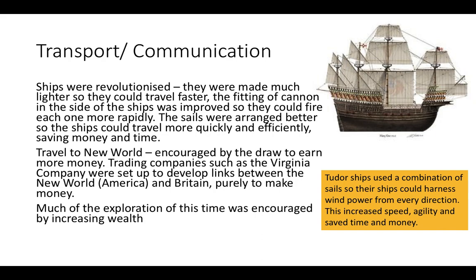Transport and communication: ships were revolutionised — made lighter so they could travel faster. The fitting of cannon in the sides of ships improved so they could fire more rapidly. Sails were arranged better so ships could travel more quickly and efficiently, saving money and time, and that led to a large movement of travel to the new world. Trading companies such as the Virginia Company were set up to develop links between America and Britain, purely to make money. Tudor ships used a combination of sails to harness wind power from every direction, increasing speed, agility, and saving time and money. Please watch the video on exploration to add more detail to your table.